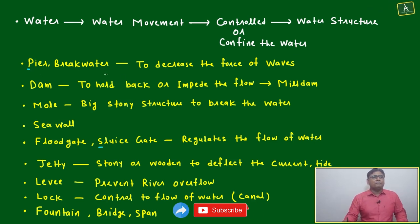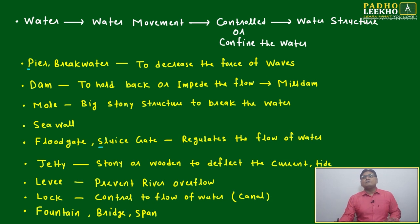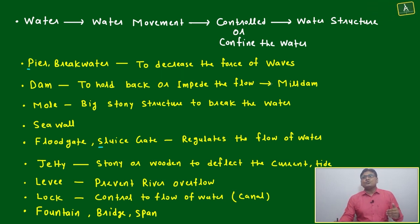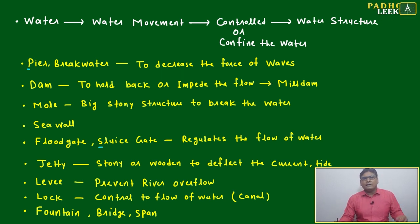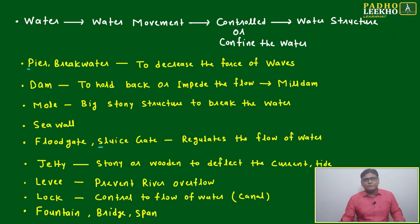One type is a pier or breakwater, used to decrease the force of waves. In coastal areas where wave force is very high and cities or local settlements are present, a pier or breakwater is constructed to reduce that force.